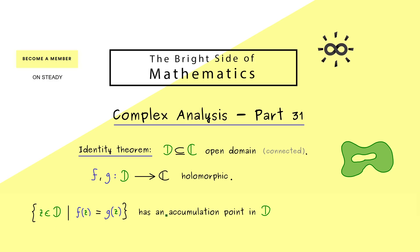If this set has an accumulation point in D, we can conclude that both functions are actually the same. So the conclusion here is f equals g. This is the identity theorem as we proved it in the last video.